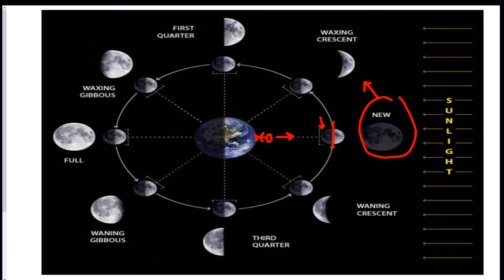Waxing crescent, first quarter, waxing gibbous, full Moon, waning gibbous, third quarter, and waning crescent back to New Moon. So, counter-clockwise. So you should be able to identify all the phases, and what the phase would look like.